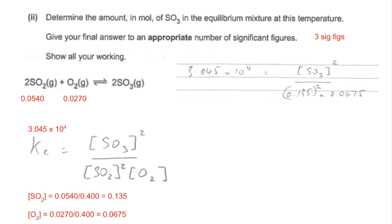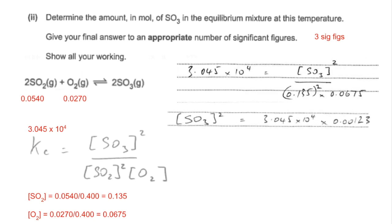So feeding all of that into the Kc expression, we get that. And rearranging it, we get the SO3 concentration squared comes out as being that. I've kept the full number in the calculator for there. So the SO3 concentration would be the square root of this. And that comes out at 6.12.